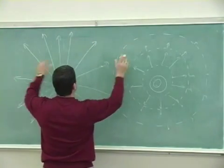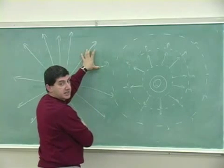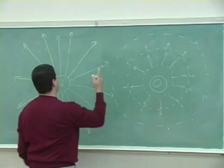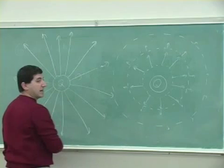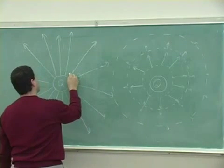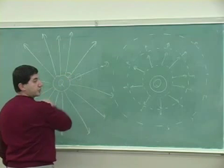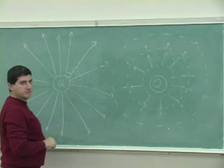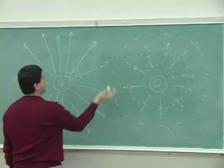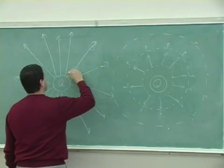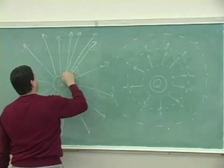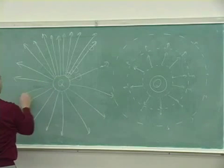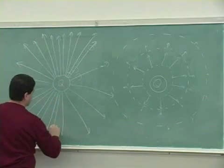And as you go away from the point charge, notice the electric field lines are getting farther apart. That's an indication that they're getting weaker. So if I draw like a little circle of a certain size, if I draw the circle over here, two lines are going through it. If I draw the line over here, only one line is going through it.